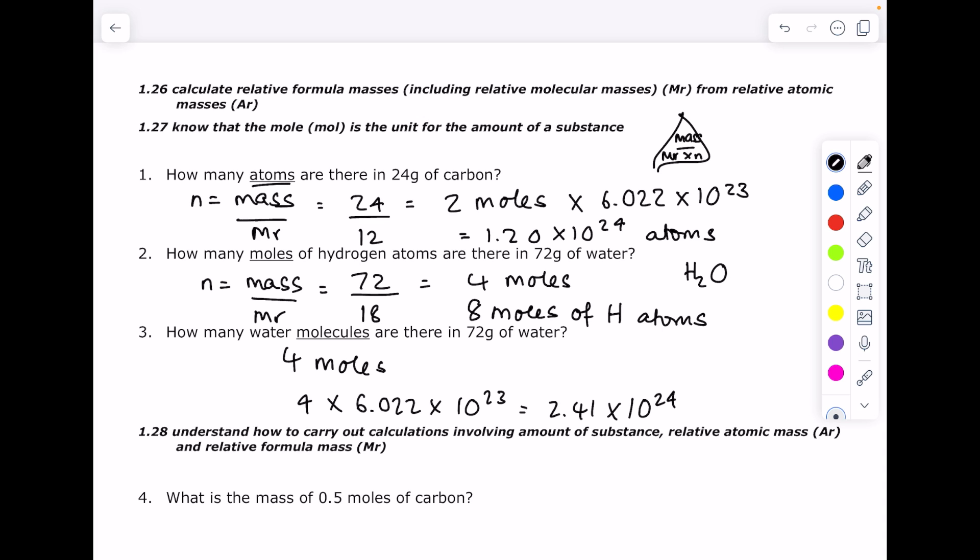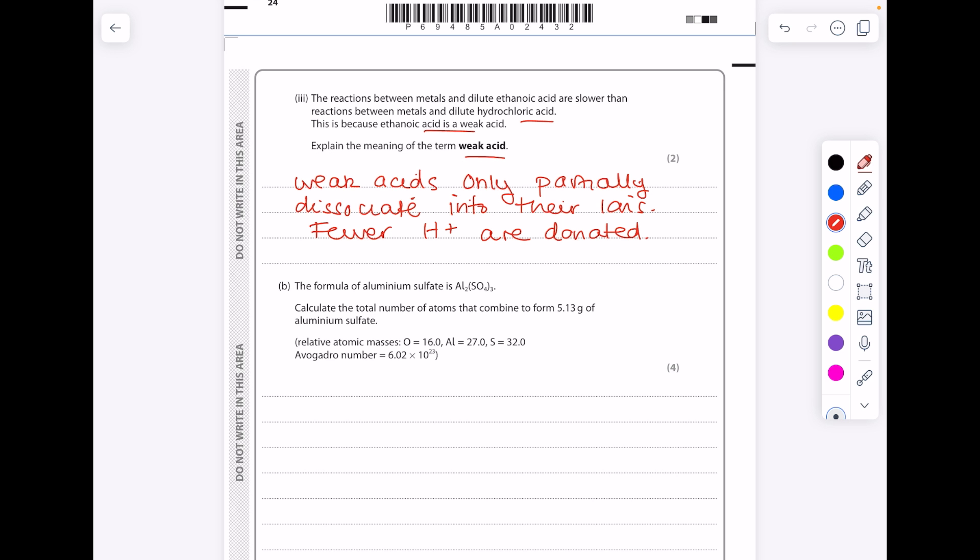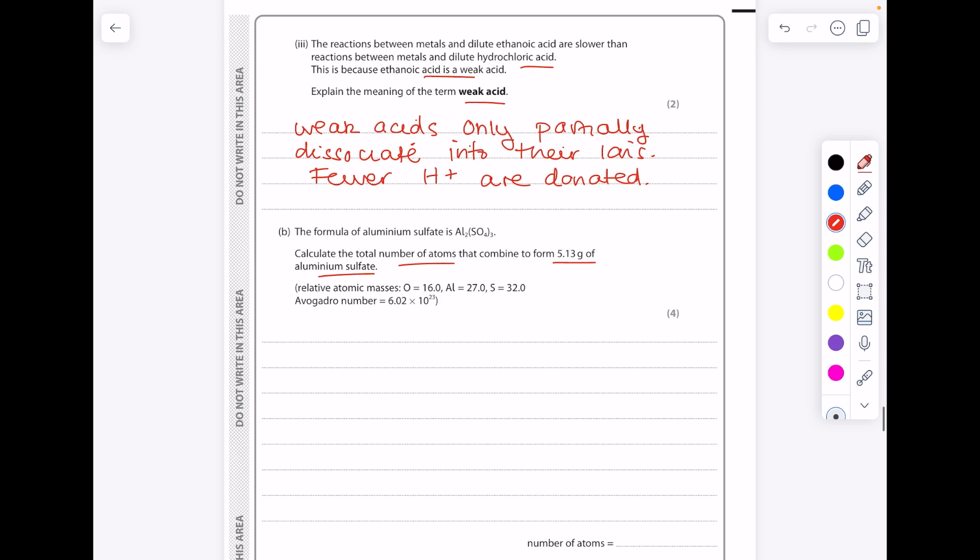Now we'll look at a more difficult past paper question. The formula of aluminium sulphate is this. Calculate the total number of atoms that combine to form 5.13 grams of aluminium sulphate. Don't stress with this. First of all we need to find the number of moles present.